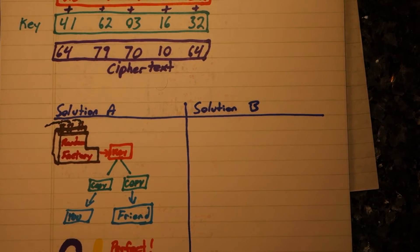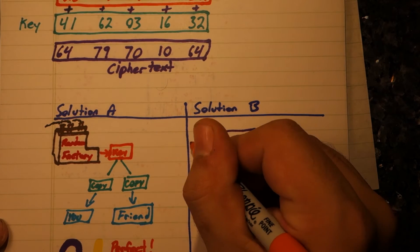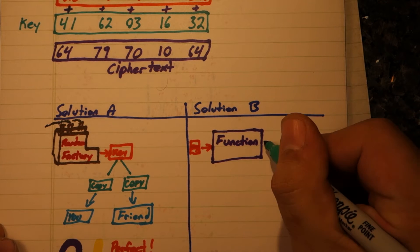There must be another way. What if we had a function which generated these random pads for us? Then we can just share this key and we're all good.